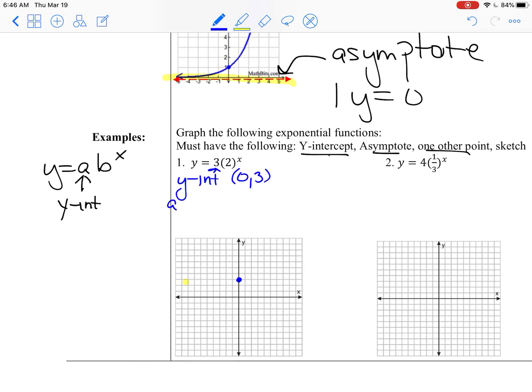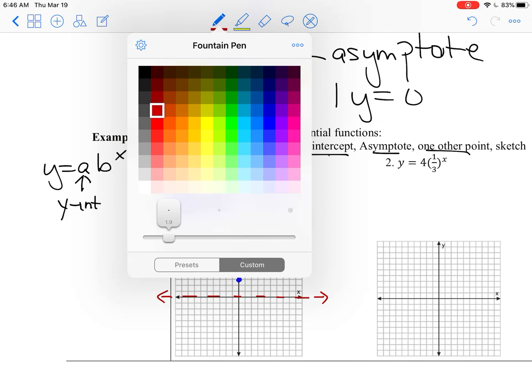My asymptote is always y equals 0. And you're going to have to show this on your graph. So if you have color pencils or something, use them. I'm going to change this to a red and just make a dashed line along the x-axis.